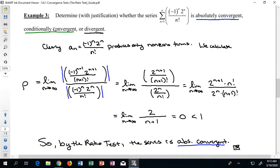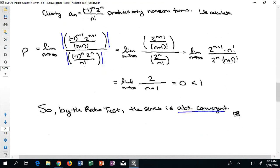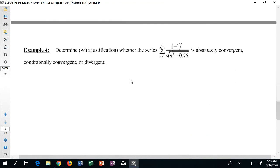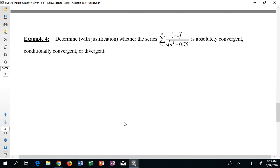Alright, we just saw in example 3 how we could use the ratio test to help us determine whether or not a series obtains one of these particular titles. Now in example 4 we're going to see a very similar question: determine with justification, does this series converge absolutely, is it conditionally convergent, or is it divergent?